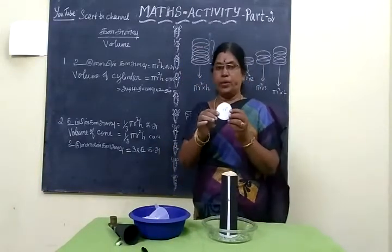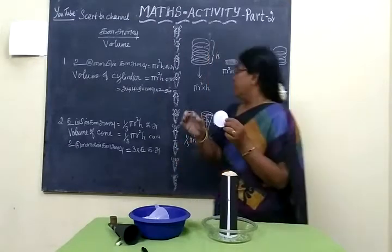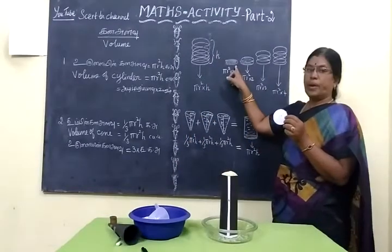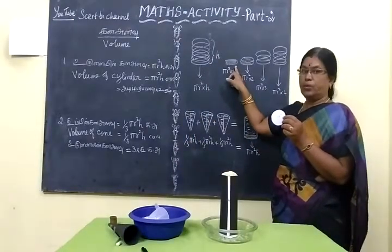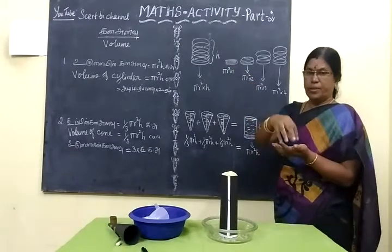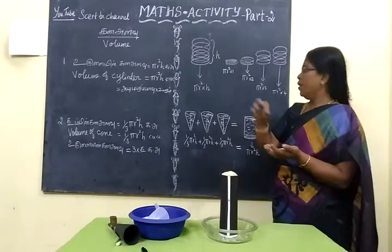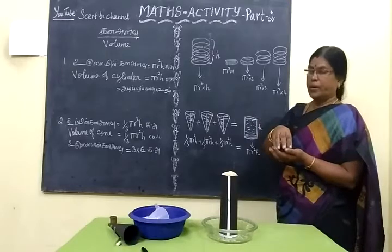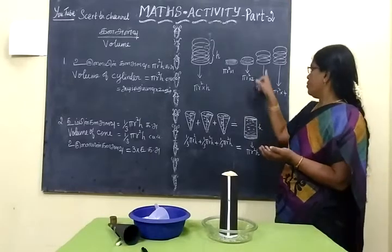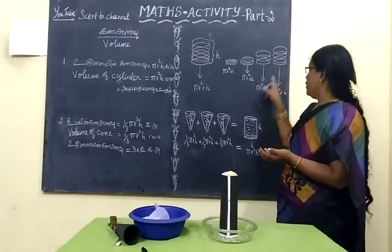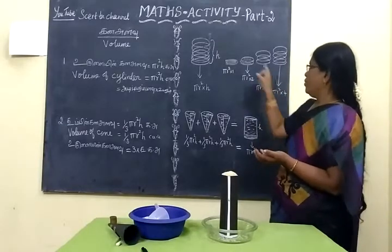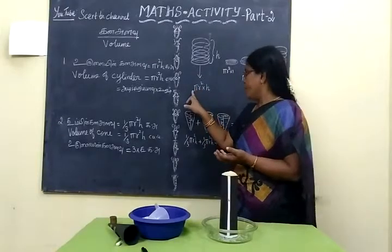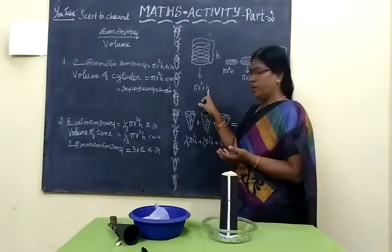We have πr² into 1 — this one is a disk. πr² into 2 — keep another disk. πr² into 3, 4, and so on, up to πr² into n.